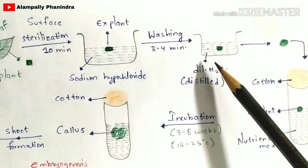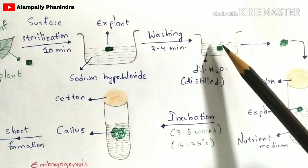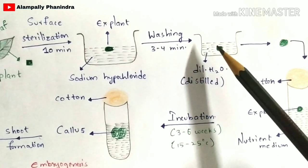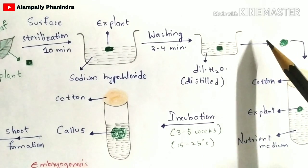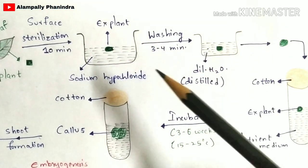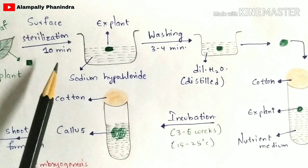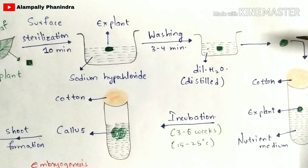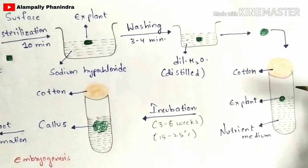After placing the explant in sodium hypochlorite solution, the bacteria get killed. Then remove the explant and take another beaker with distilled water. Place the explant in distilled water and wash it for three to four minutes. After removal, the explant will be free from bacteria. The total surface sterilization process takes about 10 minutes.